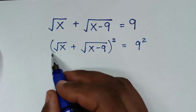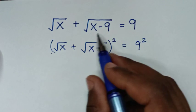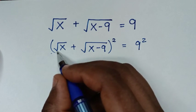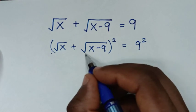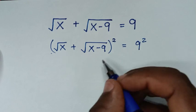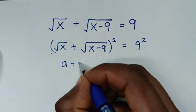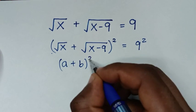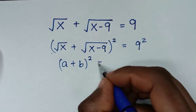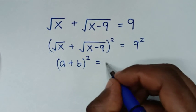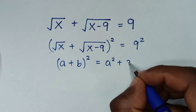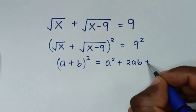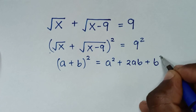Then, this expression is in the form of (a + b) squared, so it will be (a + b)² which is equal to a² plus 2ab plus b².